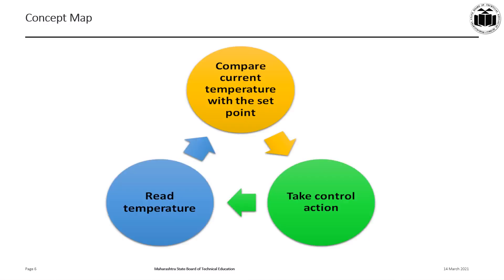The concept map of Temperature Measurement and Control is very simple. First, read the temperature, then compare the read temperature — that is, the current temperature — with a set point. If the current temperature is less than or greater than the set point, take the appropriate control action to either turn on or turn off the heating element or the cooling element, and repeat this cycle continuously.